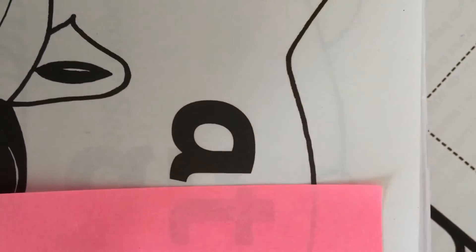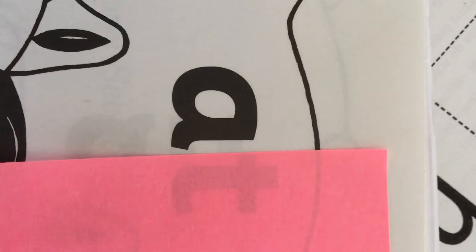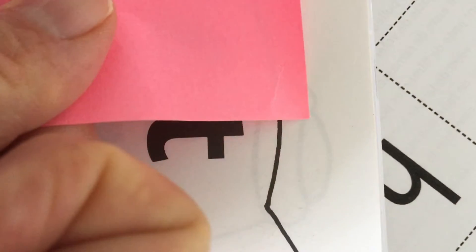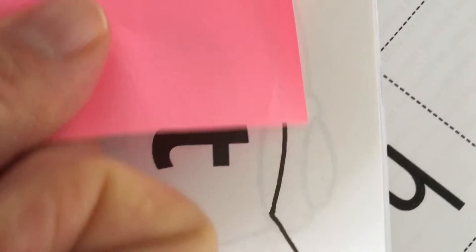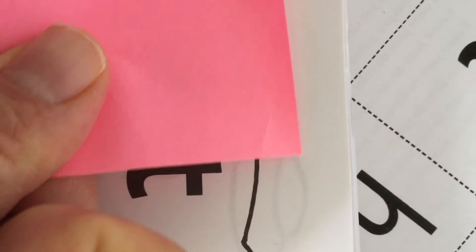I have one more worksheet for you to do, boys and girls. We're going to blend together 'at' and then we can make little words. Let's start out with 'ah' and now let's do this sound. Let's blend them.